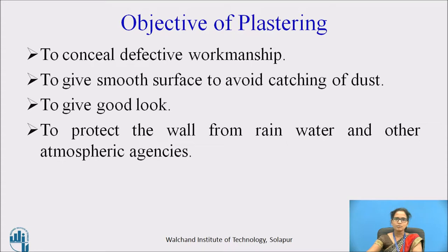The main objective of plastering is to obtain a smooth, regular, and even surface. It also preserves and protects the surface from catching dust. It gives a good look for aesthetic purposes. Also, it is used to cover the porous materials of masonry work to conceal defective workmanship.